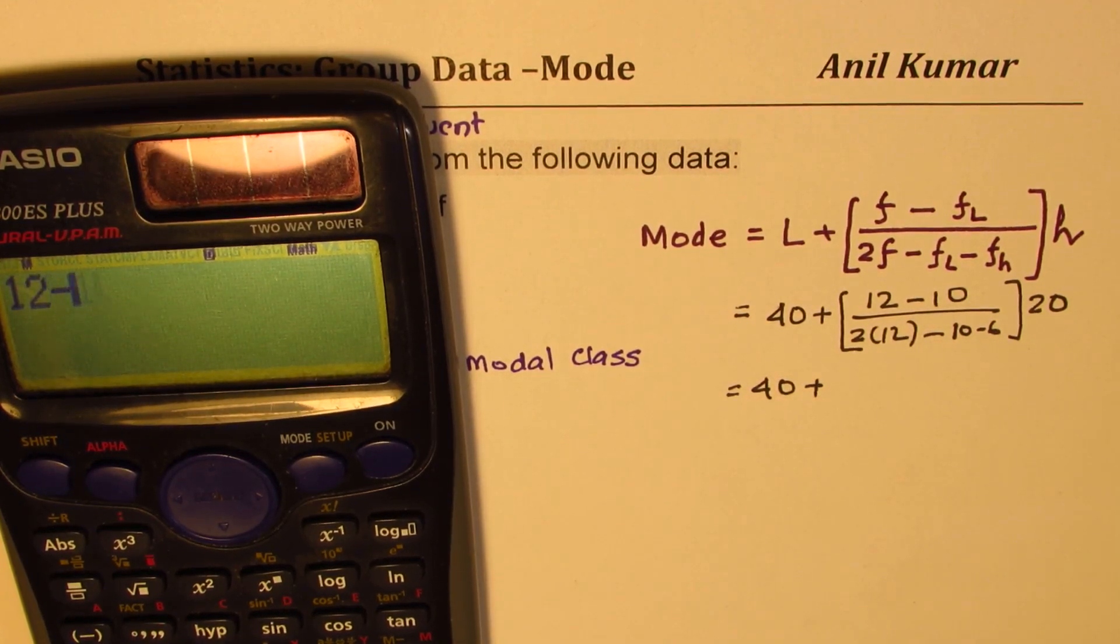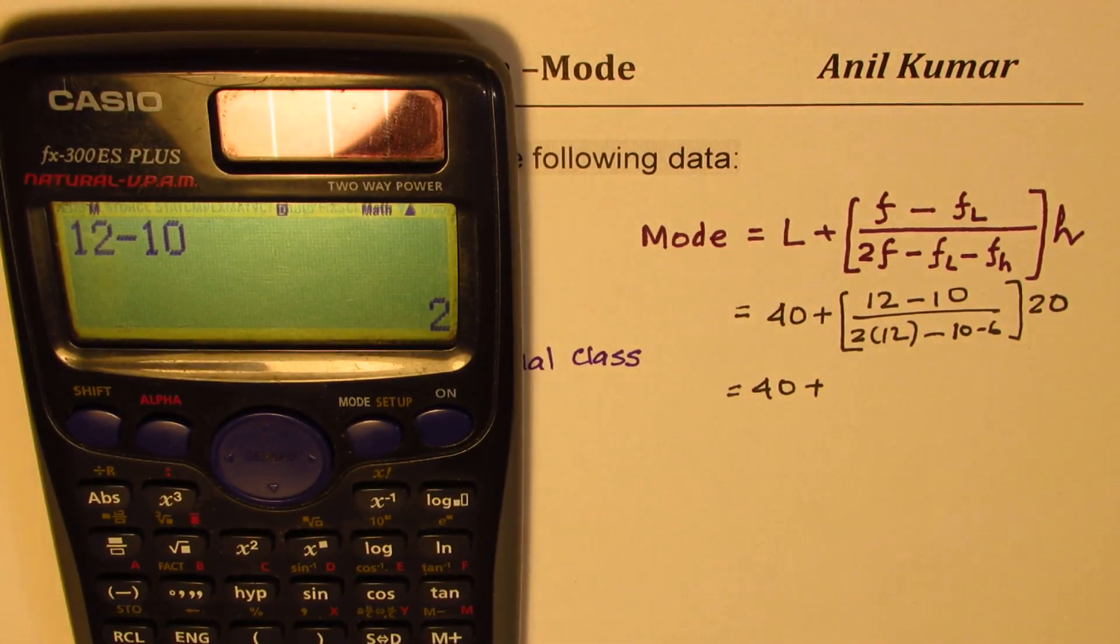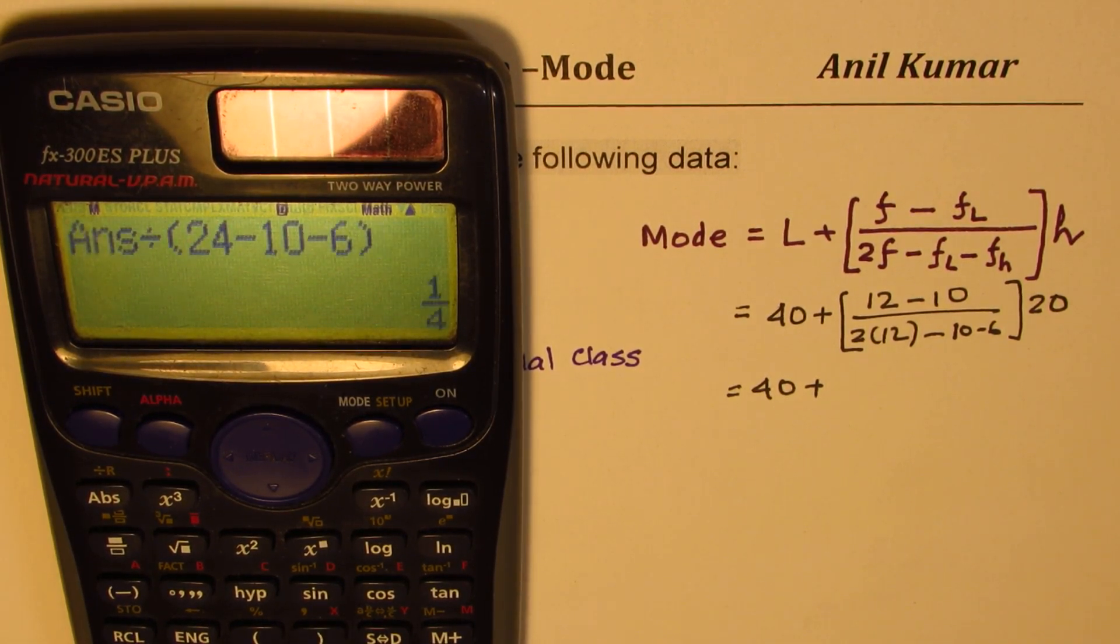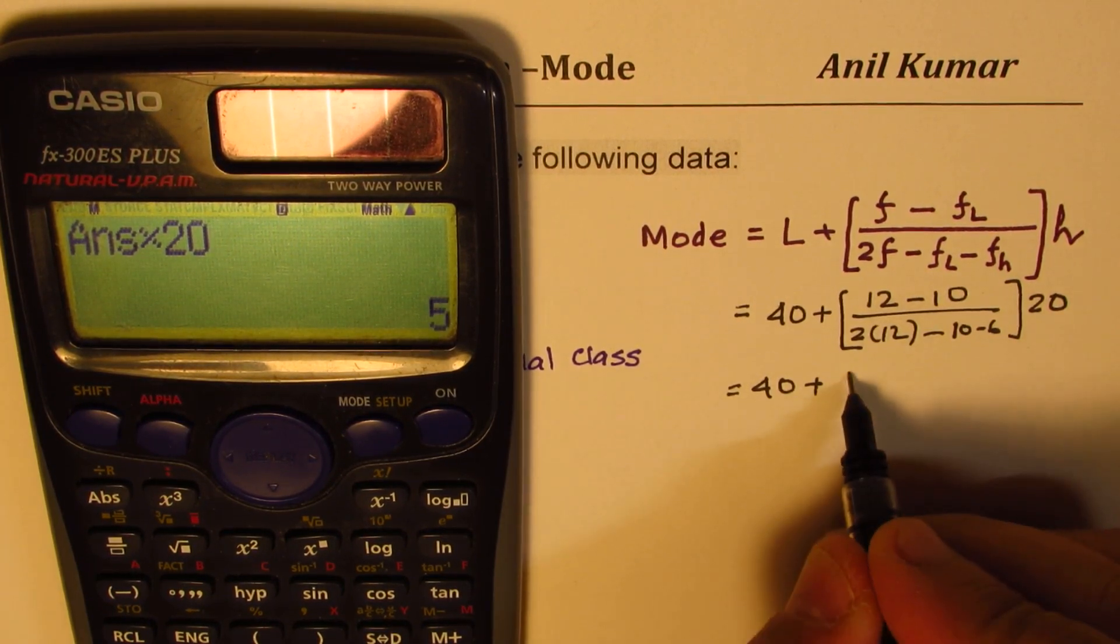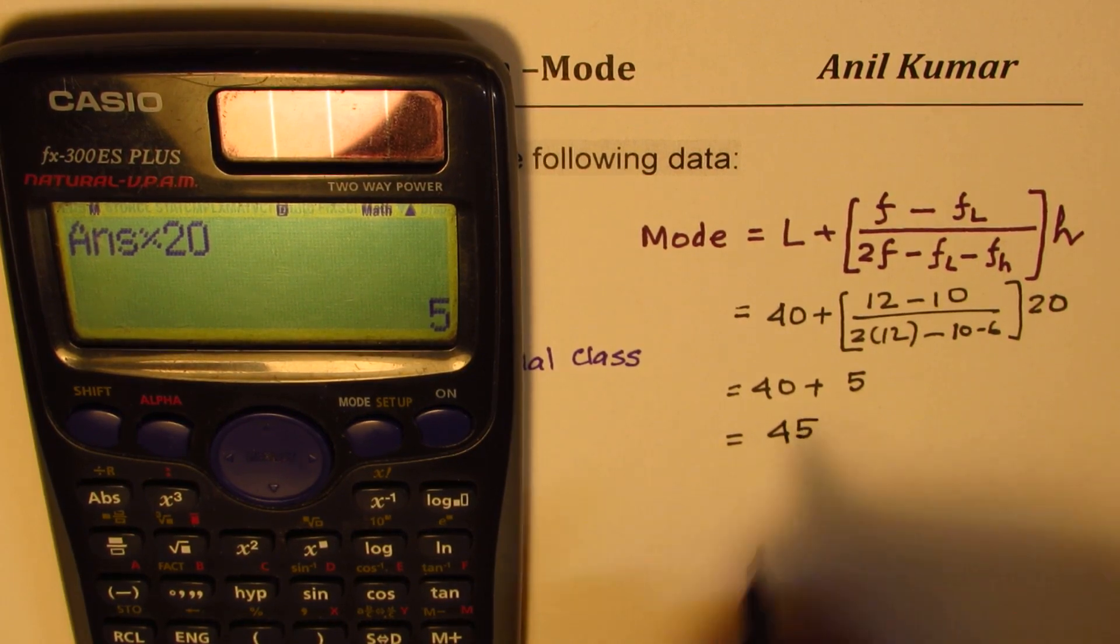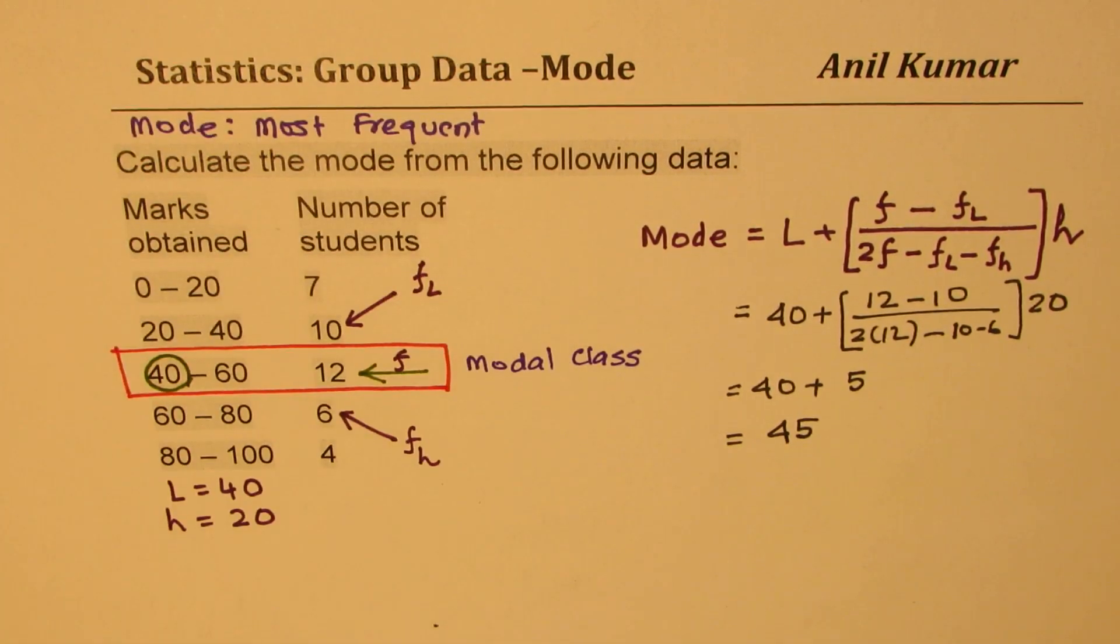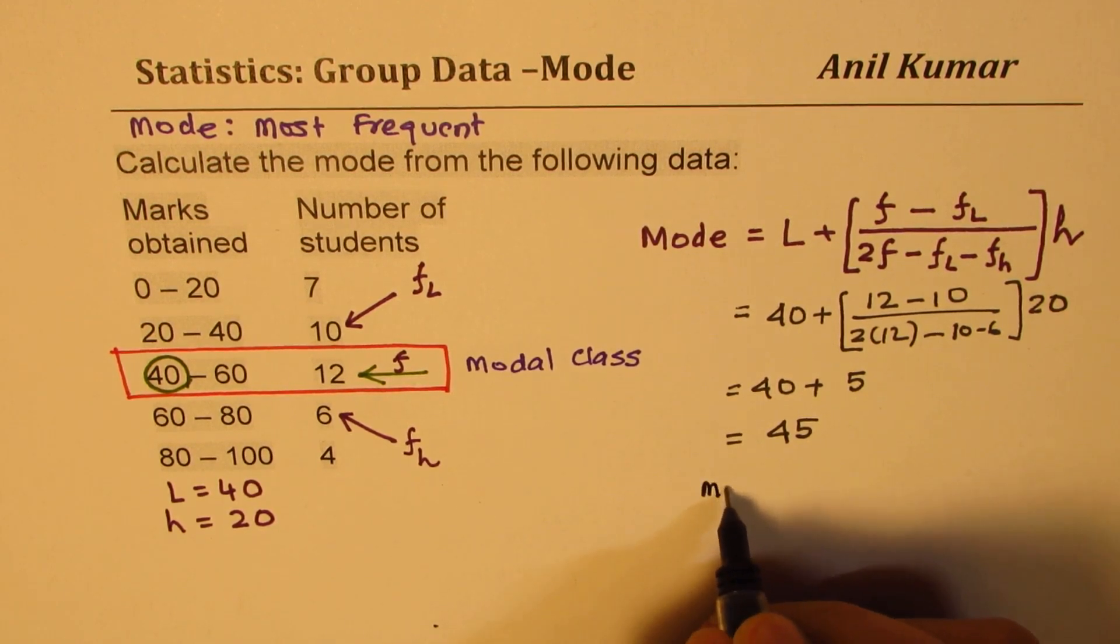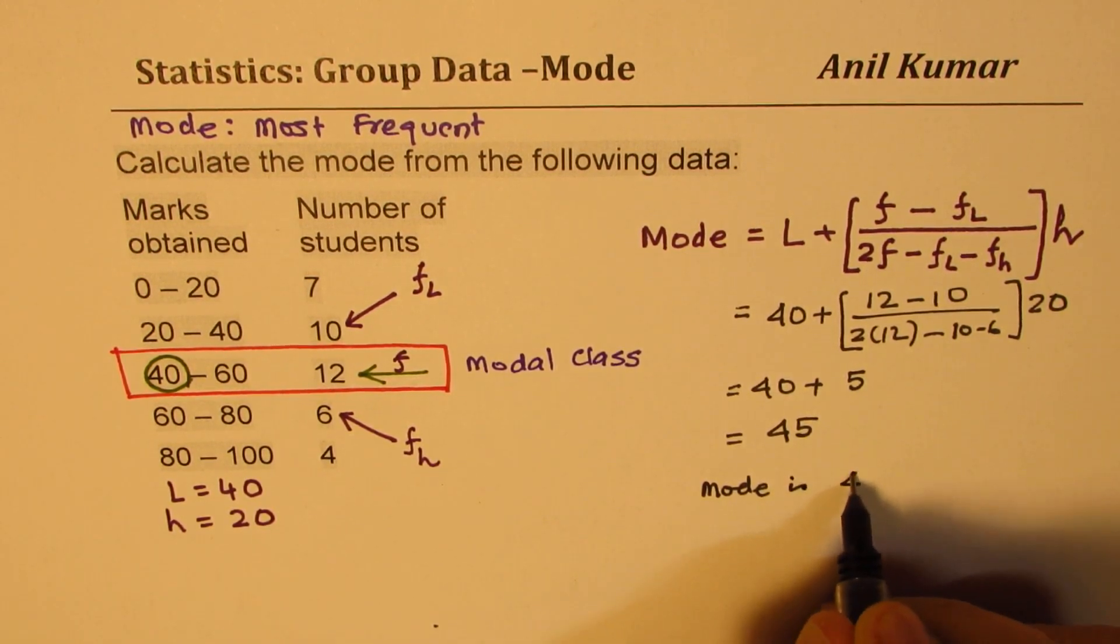We are going to divide this by 24 minus 10 minus 6. And then multiply by 20. So we have a number 5 here. And when you add 5 to 40, we get 45 as our mode. So the answer is that mode is 45.